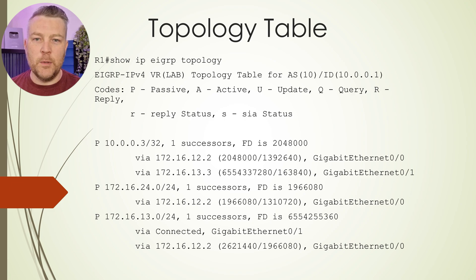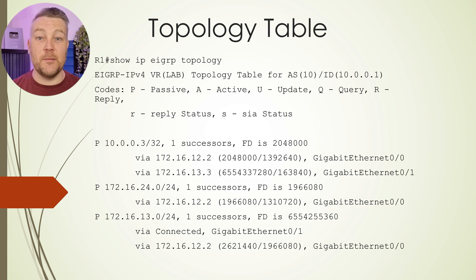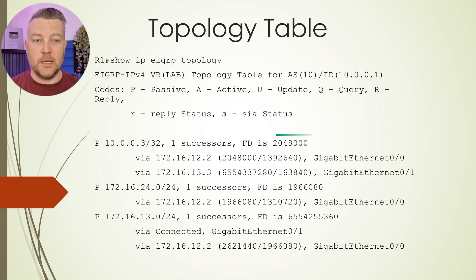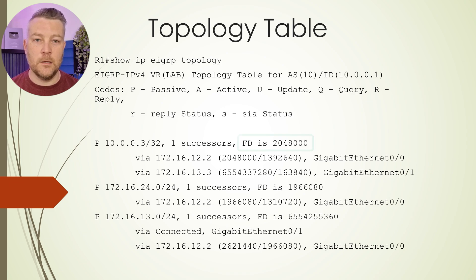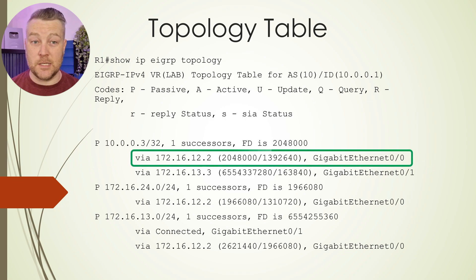When we look at that, we can see that this also contains the neighbors that have advertised this prefix to us, as well as the metrics that each neighbor has advertised. For each prefix, we can see things like the feasible distance as shown right here. Over here we can see the successor route.